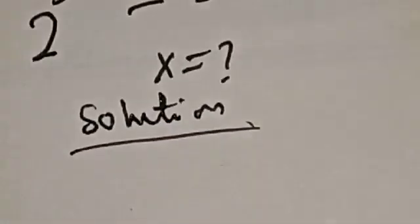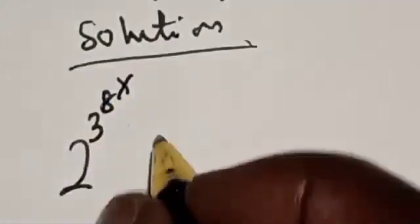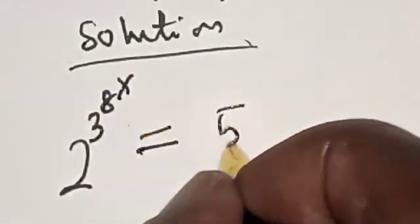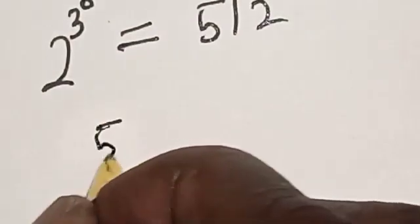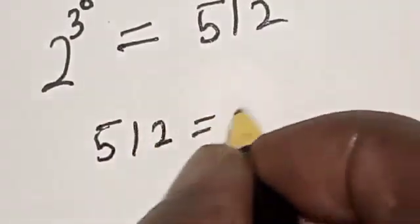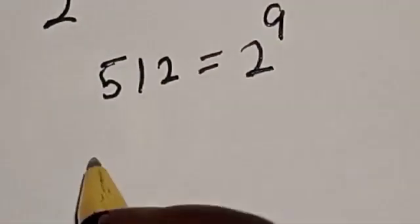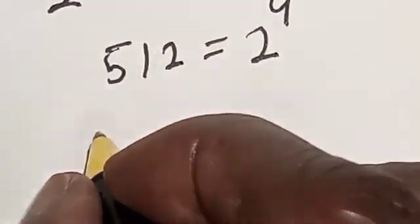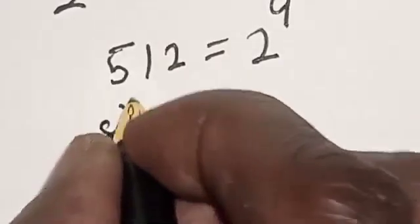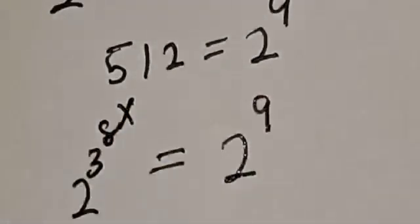We have the given equation: 2 raised to power 3 raised to power 8 raised to power x is equal to 512. But 512 is equal to 2 raised to power 9. Let's substitute — then we have 2 raised to power 3 raised to power 8 raised to power x is equal to 2 raised to power 9.